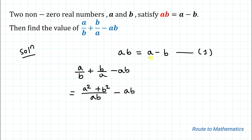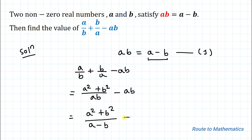From equation 1 we have ab equals a minus b. Let's substitute this value. So we have a squared plus b squared divided by (a minus b), minus (a minus b).